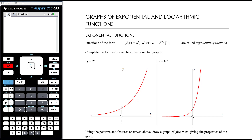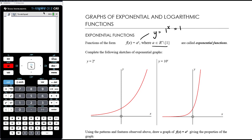Let's start with exponential functions. Functions of the form y equals a to the power of x are called exponential functions, as long as a is a positive real number other than 1. If a is a negative value, negative 2 to the power of x will oscillate above and below the x-axis, because even powers of negative numbers are positive but odd powers are negative — so by definition that's not an exponential function. And it can't be 1 because 1 to the power of x is just 1 regardless of x, giving the horizontal line y equals 1, hence not an exponential function.